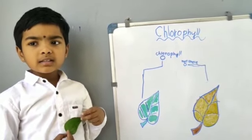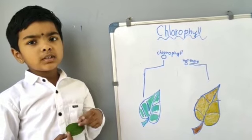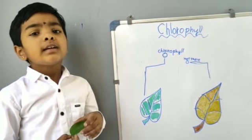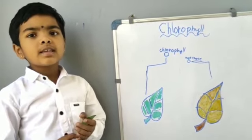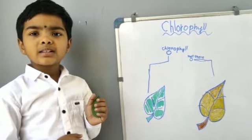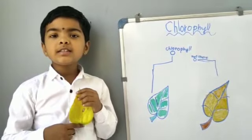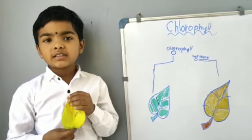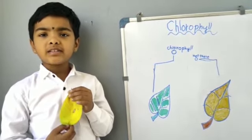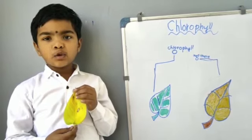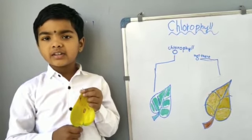In other seasons which are a bit chilly, flowers and other plants bloom. And this is a leaf which doesn't have chlorophyll. This is how leaves will look in autumn and winter seasons.